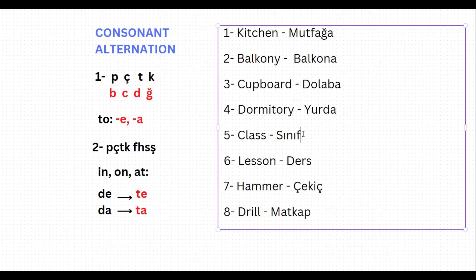Next word: 'class,' which is 'sınıf' in Turkish. If you want to say 'to the class,' it should be 'sınıf-a.' Let's check the last letter — it is f. Will it change? It will not; it's not one of peçeteğe, so it will stay as it is. To the class: sınıfa. Next word is 'lesson,' which is 'ders' in Turkish. If you want to say 'to the lesson,' it should be 'ders-e.' The last letter is not one of peçeteğe, so it will not change. To the lesson: derse.